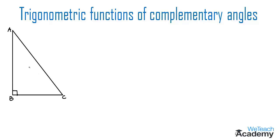Here there is a triangle ABC right angled at the vertex B. Let angle A equal to theta, then angle C will be equal to 90 minus theta. We already define the trigonometric ratio sine theta which is